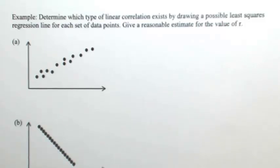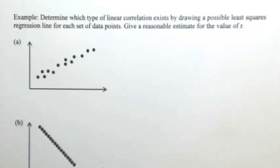Determine which type of linear correlation exists by drawing a possible least squares regression line for each set of data points. Give a reasonable estimate for the value of r. R is the correlation coefficient.